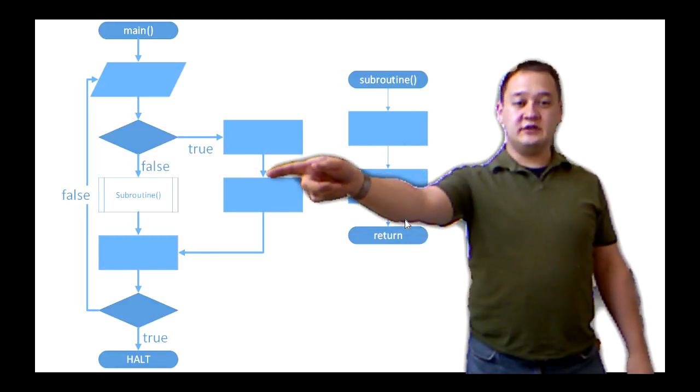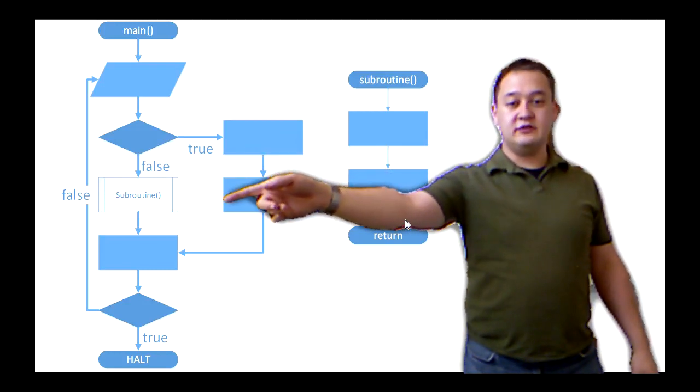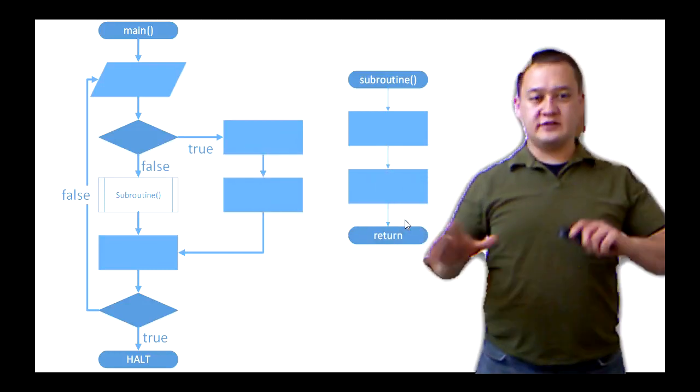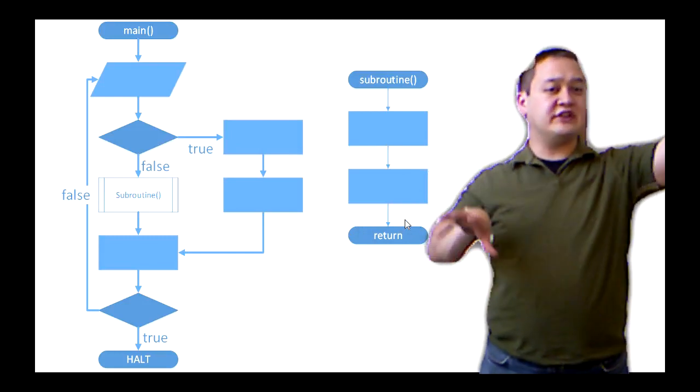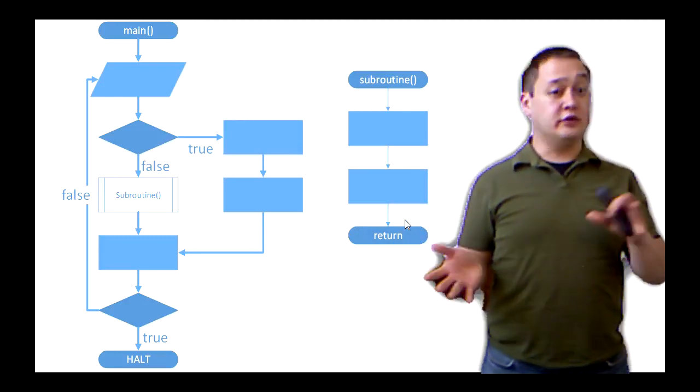And then the other option is, if my condition was false, I'm going to run my subroutine, which is going to do a subroutine call. So that's what a branch does. It tells us which direction we're going to go. And there can be any infinite number of things that we're going to branch to and from.